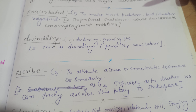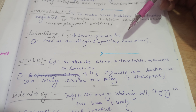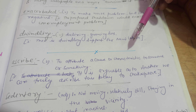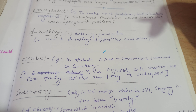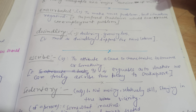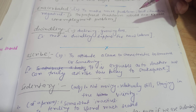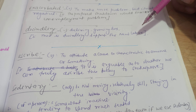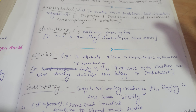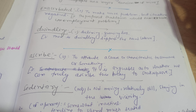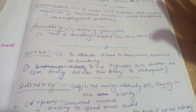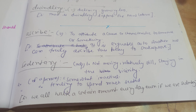Ascribe. I was reading a newspaper and found this word. It is a verb and the first meaning is to attribute a cause or characteristic to someone or something — to link the cause of something to someone. The sentence is: it is arguable as to whether we can truly ascribe this play to Shakespeare. Like, can we ascribe, correlate, or attribute this play to Shakespeare — because some aspects of the play resembled Shakespeare's work.